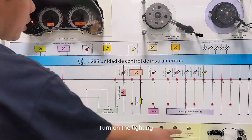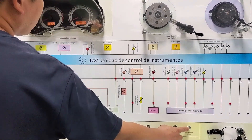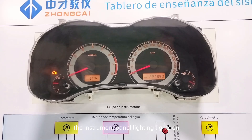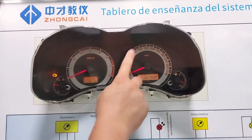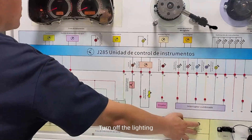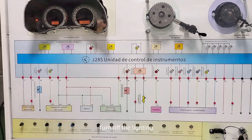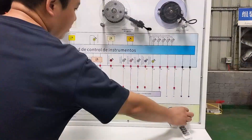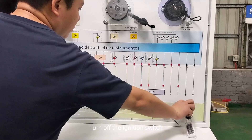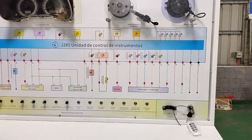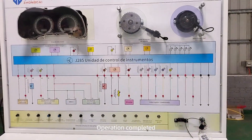Turn on the lighting — the instrument panel lighting lights on. Turn off the lighting. Turn off the ignition switch. Operation completed.